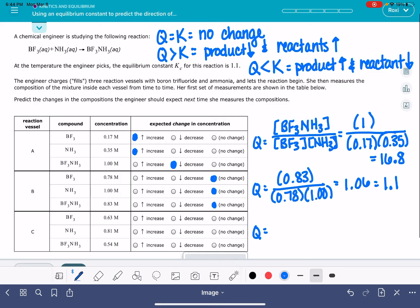Let's look at the last one. The BF3NH3 concentration is 0.54, the BF3 concentration is 0.68, and the NH3 concentration is 0.81.